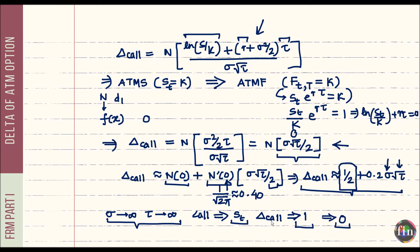So when we say delta of an at-the-money call is approximately 0.5 and a put is approximately −0.5, there are many assumptions behind those values. However, for FRM exam questions on computing VaR using the delta-normal method for long or short call or put positions, you are fine to use 0.5 or −0.5 — the exam solutions assume this approximation is acceptable.